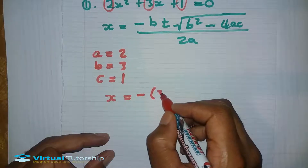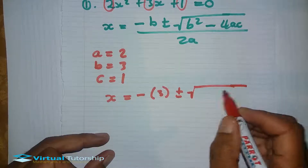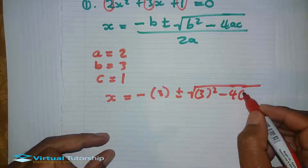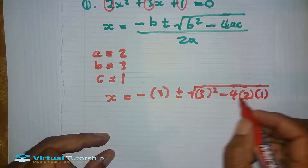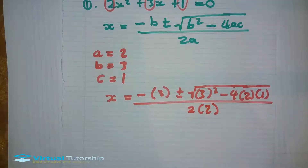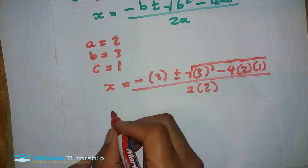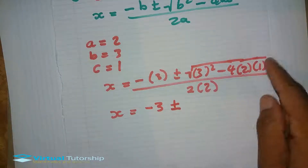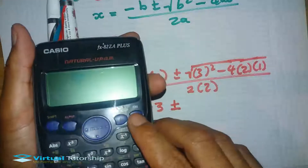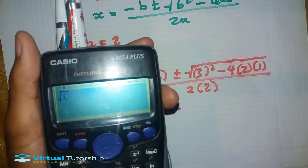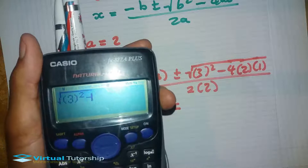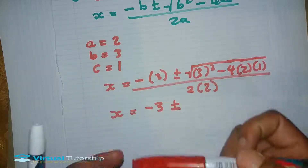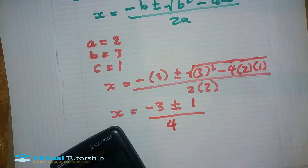So we open the formula: it is minus b, which is minus 3, plus or minus the square root of 3 squared minus 4 times 2 times 1, all over 2 times 2, which is 4. The square root simplifies to 1, so we have minus 3 plus or minus 1, all over 4.